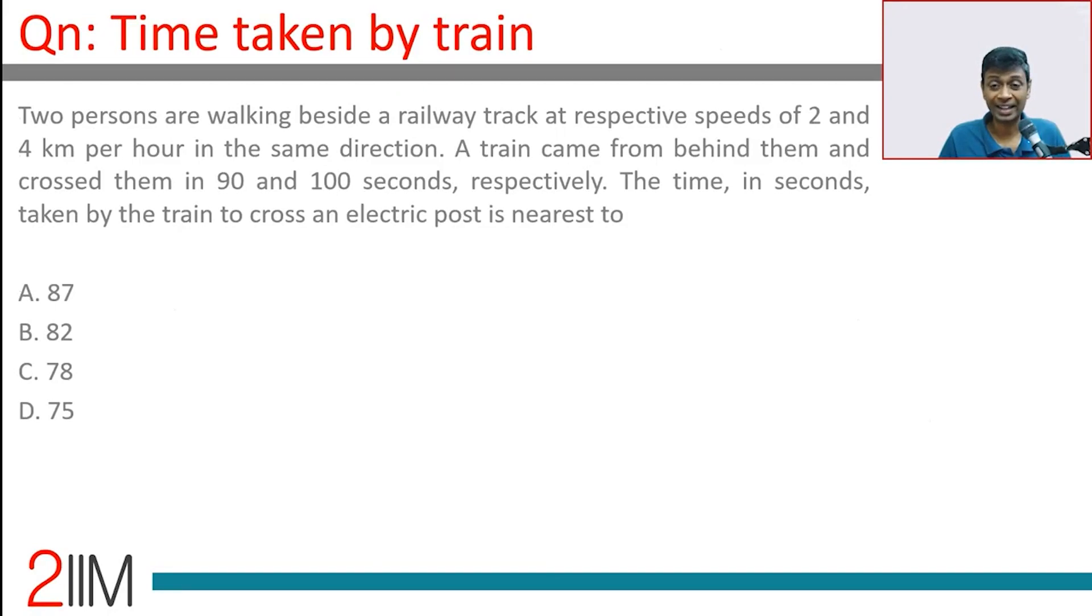Two people are walking beside a railway track at respective speeds of 2 and 4 km per hour in the same direction. Person A is going at 2 km per hour, B is going at 4 km per hour.